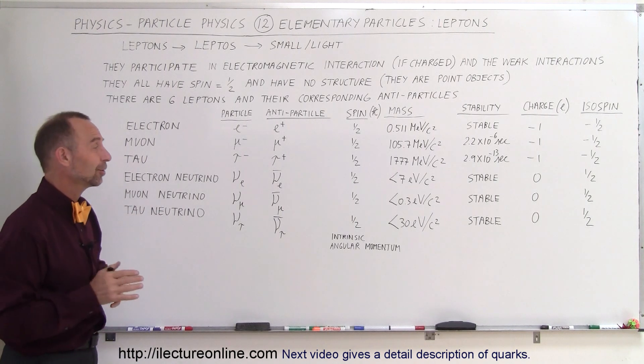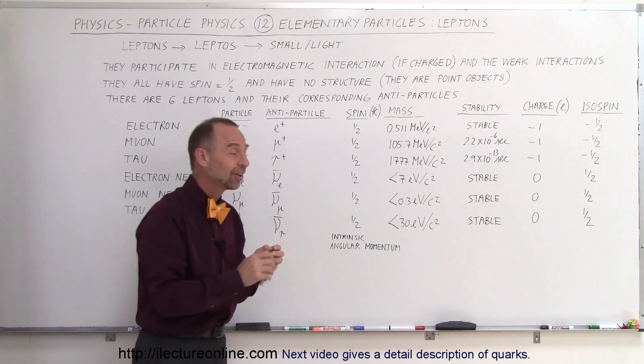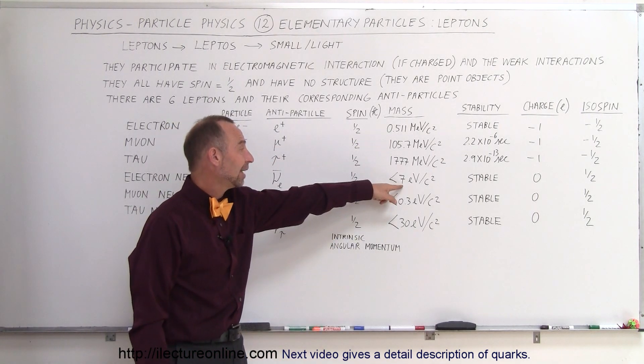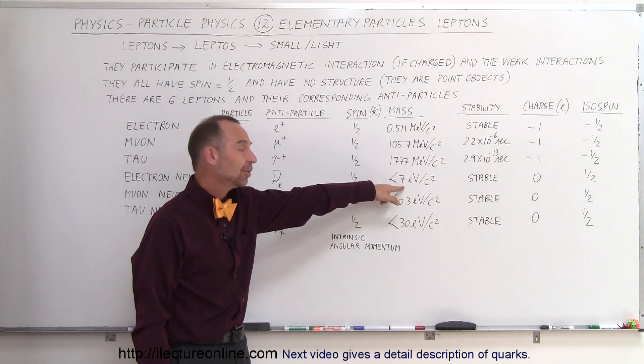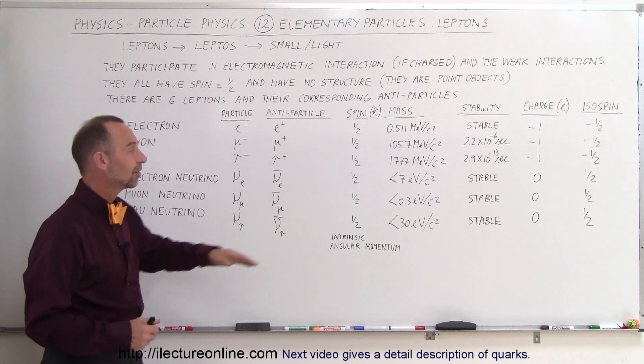Now the neutrinos are very strange particles. Notice they are extremely small. They have very small amount of mass. Much, much smaller than for example an electron. In this case, it is 7 versus half a million. So it's about 1 in 100,000.